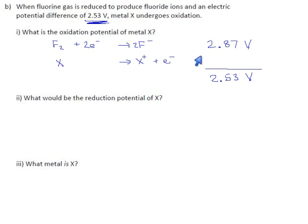So what does that tell us about X? If we added up these two reactions and got 2.53, then that means 2.87 plus X, some unknown voltage, came out to 2.53.